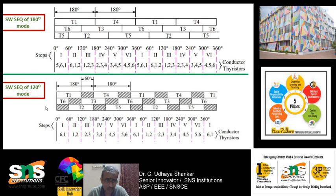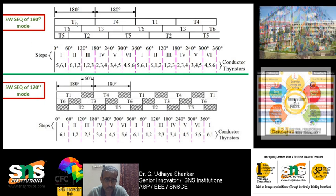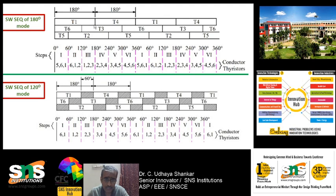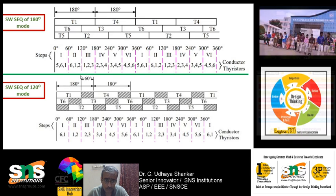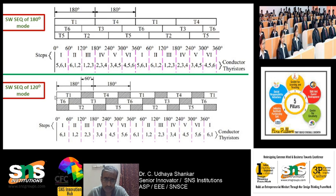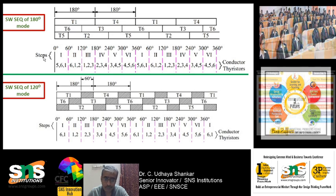In 120-degree mode there is a 60-degree gap between T1 and T4. T1 conducts only for 120 degrees and T4 also conducts only for 120 degrees. Each and every device conducts for 120 degrees in the 120-degree mode, whereas each and every device conducts for 180 degrees in the 180-degree mode. That is the key difference.